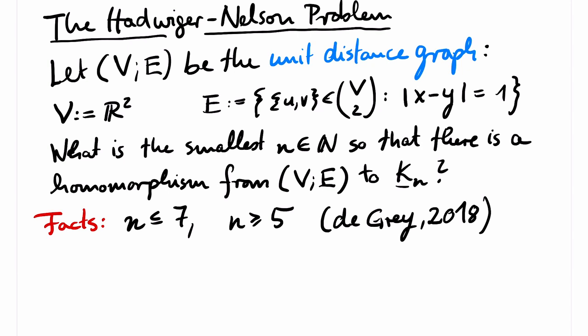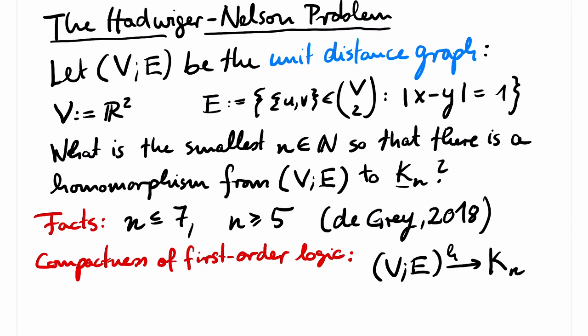And here comes another fact about this problem. And this is also the connection to logic. Using the compactness theorem for first-order logic that we prove later in the course, one can show that an infinite graph has a homomorphism to kn if and only if all finite subgraphs have a homomorphism to kn.